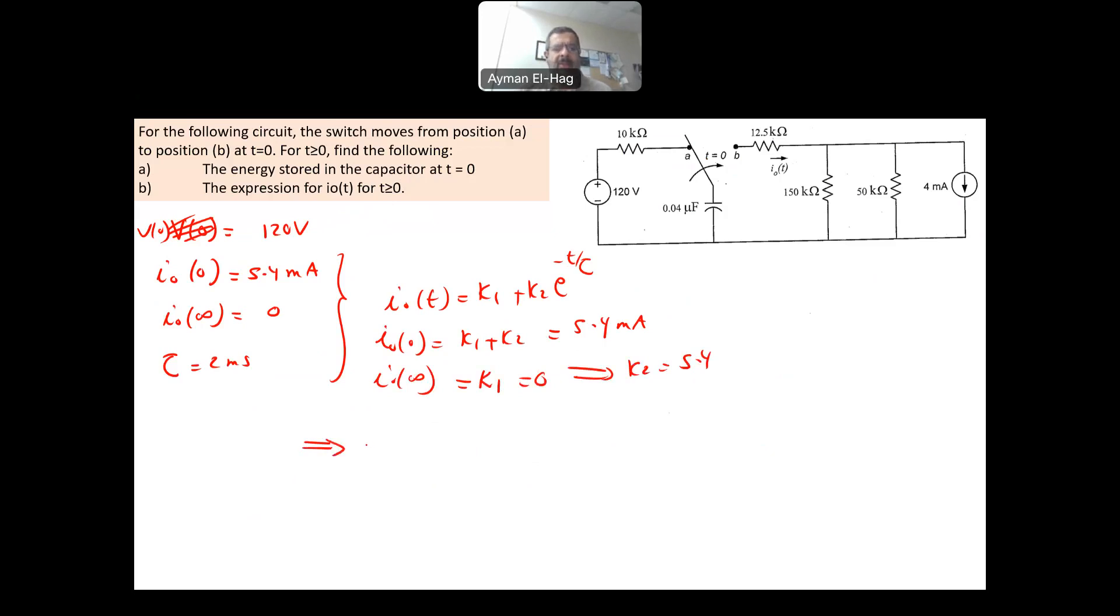And hence, your I0 of T is equal to 0 plus 5.4E minus T over 2 millisecond, which is equal to 5.4E minus 500T milliamp for T greater than or equal to 0.